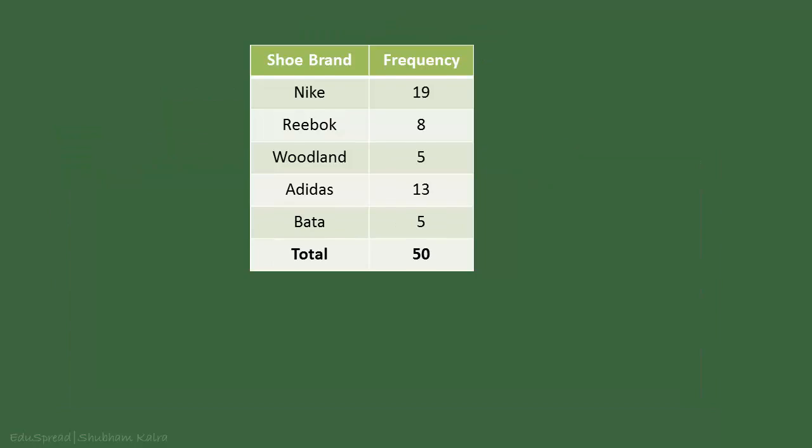If we count the number of times Nike appears in our table, we get 19. Similarly, Reebok appears 8 times, Woodland appears 5 times, Adidas appears 13 times and Bata appears 5 times. I have summarized these counts in the table presented here. And this is what we call frequency distribution table.